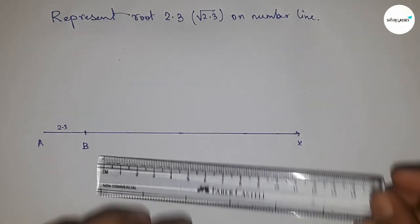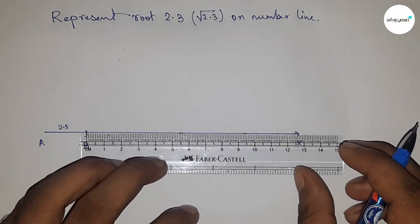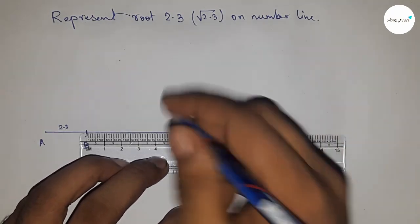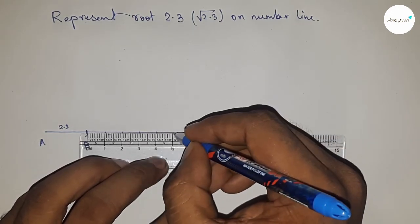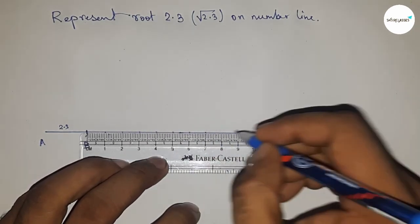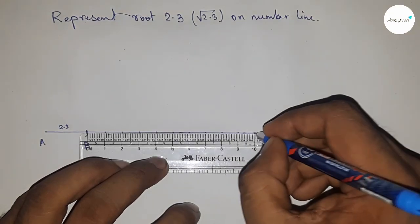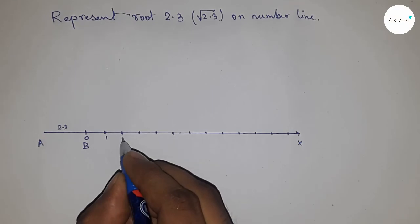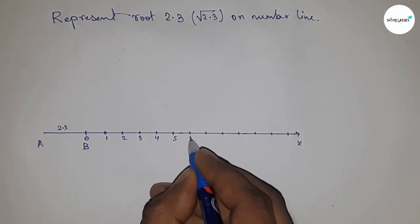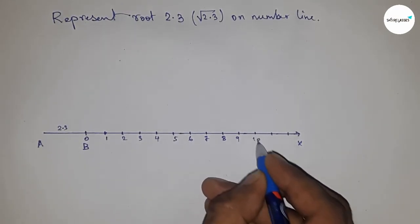Now mark all the numbers from B to X on the line using a scale: 1, 2, 3, 4, 5, and so on. Mark point C at 1 unit from B.